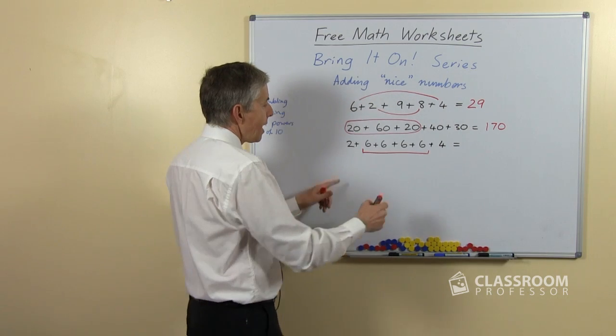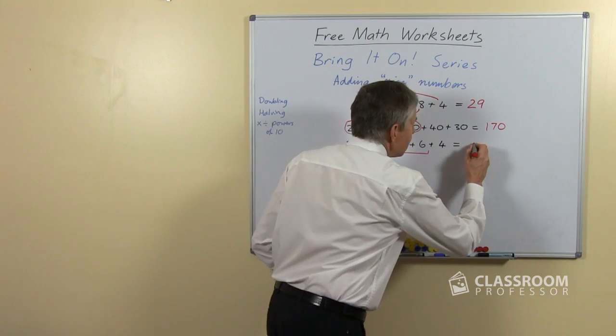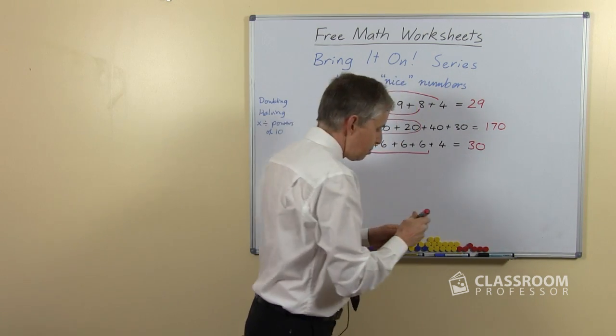6 4's is 24, and we've got a 4 and a 2 which is another 6, so that's 5 6's, which is 30. So there's a number of different approaches.